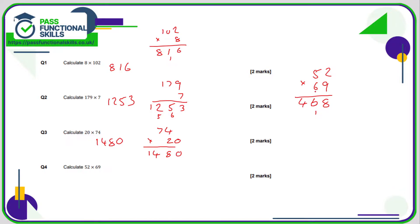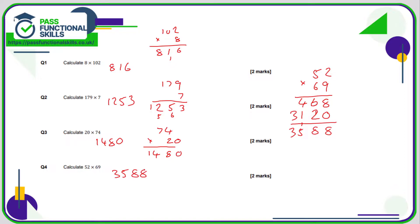Moving on to the 6 — this is the 6 of 60 so I'm going to put in a 0. 6 twos are 12, 2 carry 1; 6 fives are 30 plus 1 is 31. Add them together and the answer is 3588.